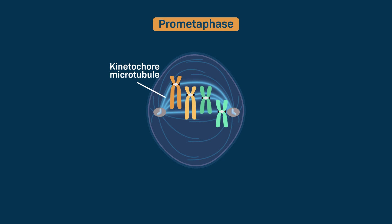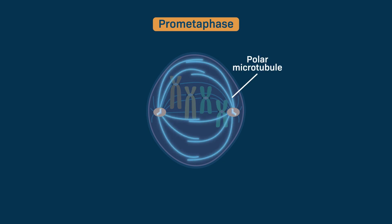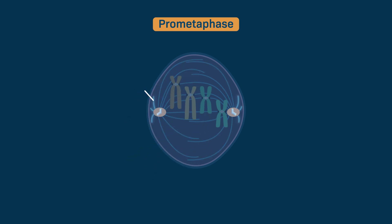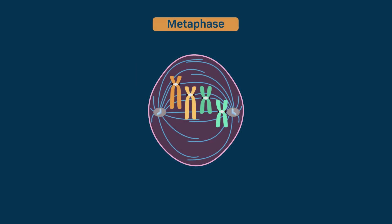Importantly, each mitotic spindle also contains two other types of microtubules. Polar microtubules extend from each centrosome, reach across the cell, and interact with one another. This helps keep the centrosomes separated and defines the overall length of the spindle. Shorter microtubules, called astral microtubules, anchor the spindle poles to the cell membrane.